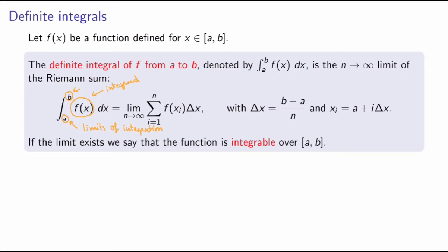Another important difference: this whole expression is not a function — it's a number. You're calculating the limit of a Riemann sum, so it gives you a number; it's not a function of x. If you don't have the limits of integration, you're calculating the general antiderivative of f of x, which is itself a function of x, so it's very different.